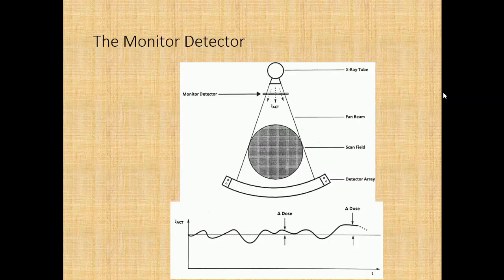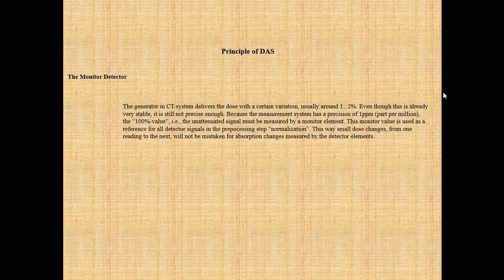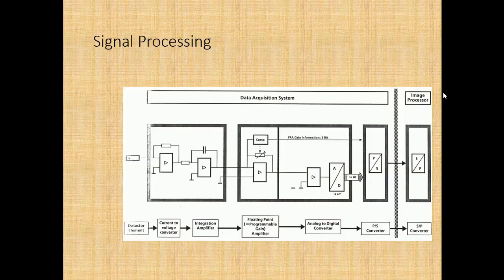The monitor detector: the generator in a CT system delivers dose with a variation of around 1-2%, which is not precise enough for the measurement system's required precision of 1 ppm (part per million). The 100% value, i.e., the unattenuated signal, must be measured by a monitor element. This monitor value is used as a reference for all detector signals in the pre-processing step of normalization, so that small dose changes are not mistaken for absorption changes measured by the detector elements.